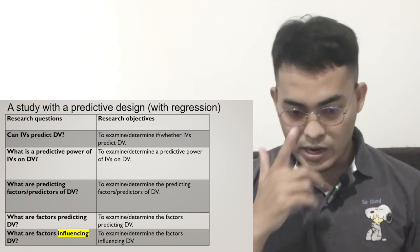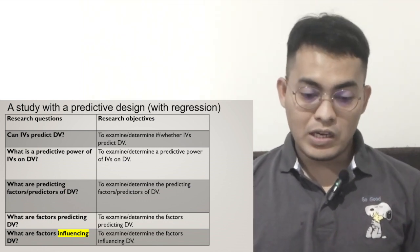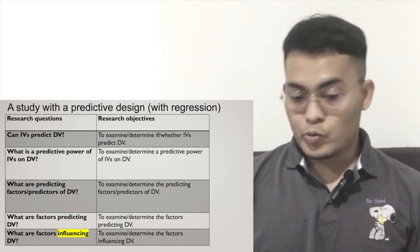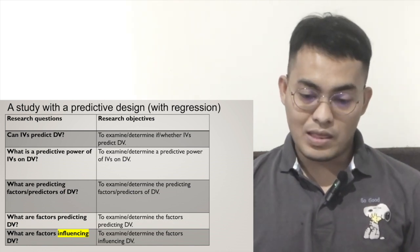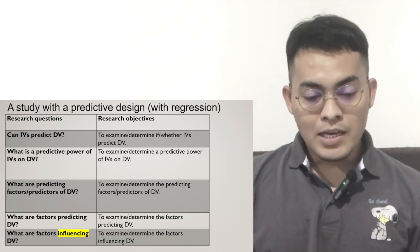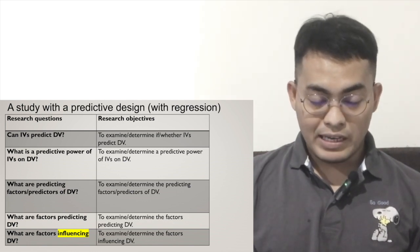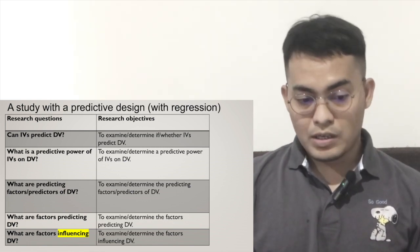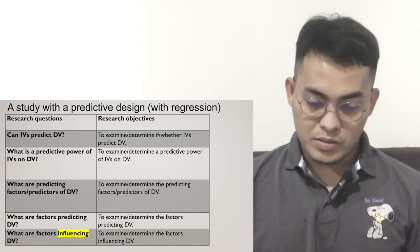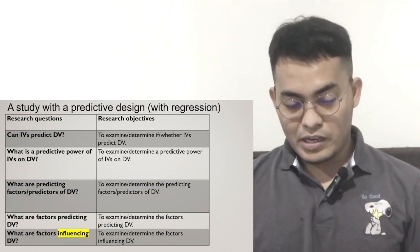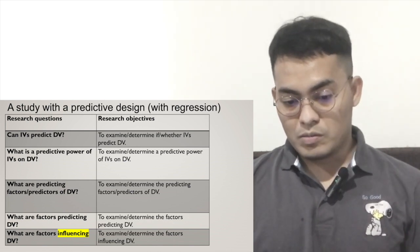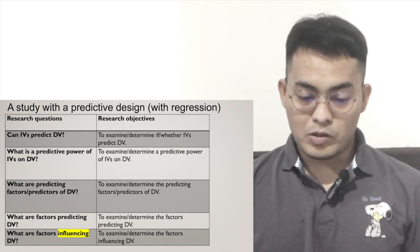Here I try to differentiate the predictive design with regression only — without mediating or moderating variables. The first research question is: can independent variables predict dependent variable? And the research objective is: to examine or determine if or whether independent variables predict dependent variable. The second one: what is the predictive power of independent variables on dependent variable? And the objective is: to examine or determine the predictive power of independent variables on dependent variable.